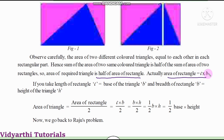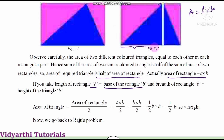The area of the rectangle is equal to length into breadth. If we take the length of the rectangle L as equal to the base of the triangle B, and the breadth of the rectangle B as the height of the triangle H, then: length corresponds to base, and breadth corresponds to height.